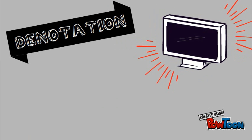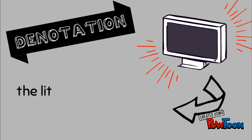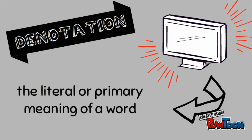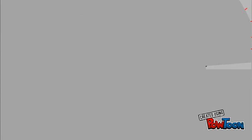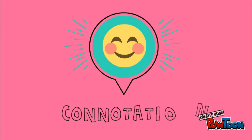First, we need to understand what a denotation is. It's defined as the literal or primary meaning of a word. The next step is connotations.